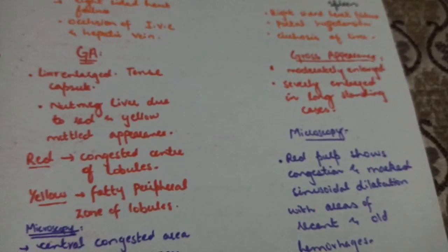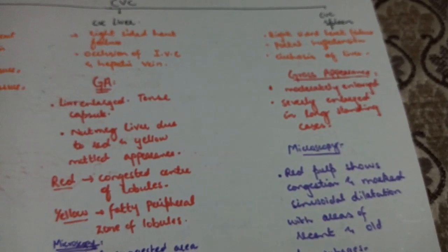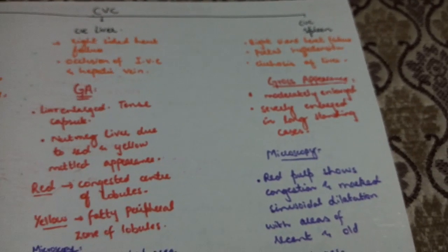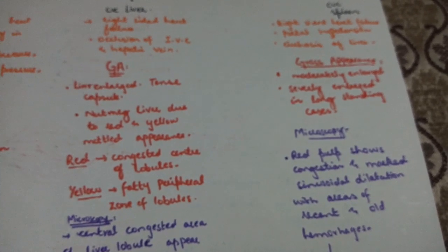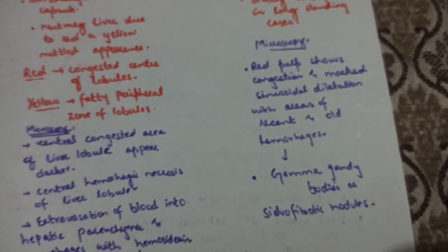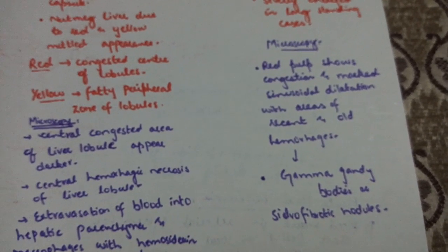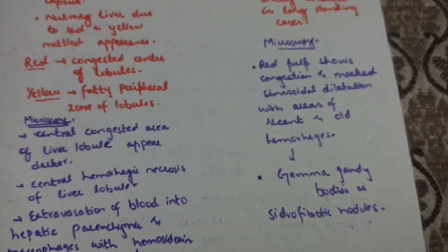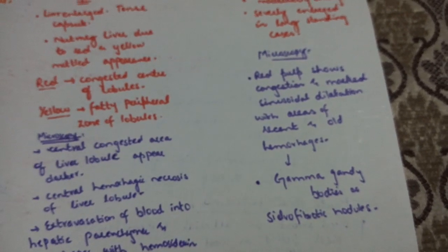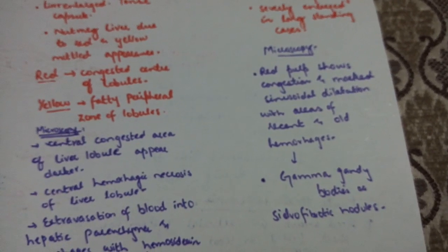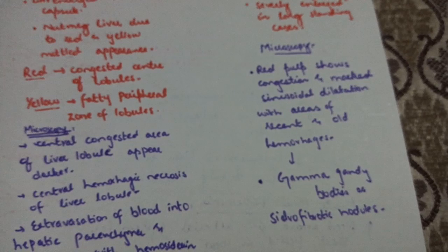Now we will discuss CVC of the spleen, which occurs in right-sided heart failure, portal hypertension, and cirrhosis of the liver. Gross appearance: the spleen is moderately enlarged and can become very large in long-standing cases. Microscopically, the red pulp shows congestion and marked sinusoidal dilatation with areas of recent and old hemorrhage. These hemorrhages may organize to form structures called Gamma-Gandy bodies — fibrotic nodules containing hemosiderin deposits.